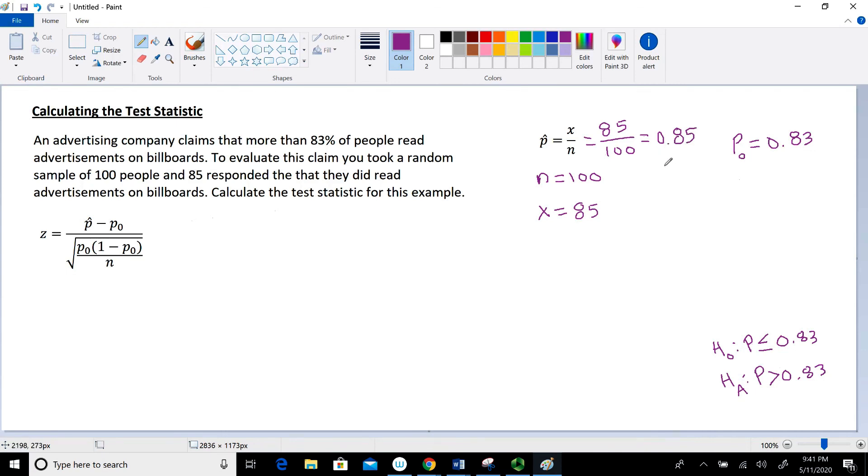Now we have everything we need in order to calculate that test statistic. We have P hat, which is given there. We have P sub 0 right here. And we have our sample size, which is given right there. So let's go ahead and start working through this. So this is going to be equal to our sample proportion of 0.85 minus our hypothesized value of the population proportion, which is 0.83.